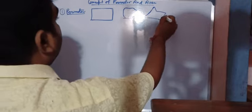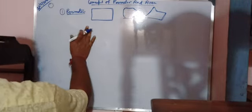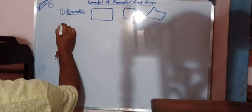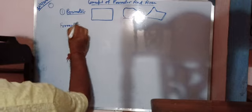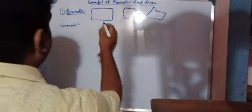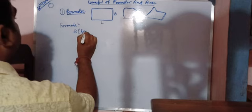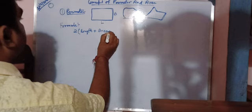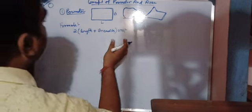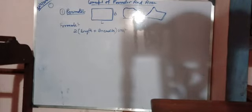Now come to the formulas. The first main formula is the perimeter of a rectangle. If you consider length (L) and breadth (B), the formula for the perimeter of a rectangle is: 2 into (length plus breadth). The unit can be centimeter, meter, or kilometer depending on the scale.